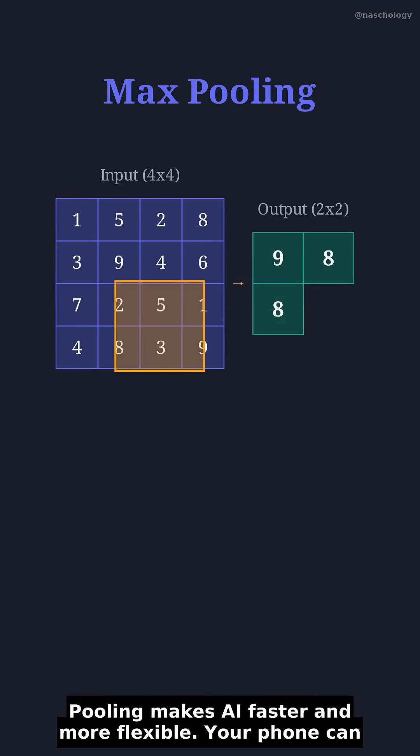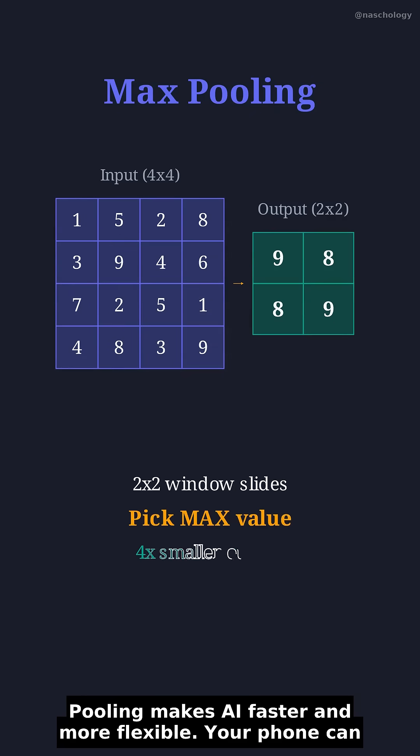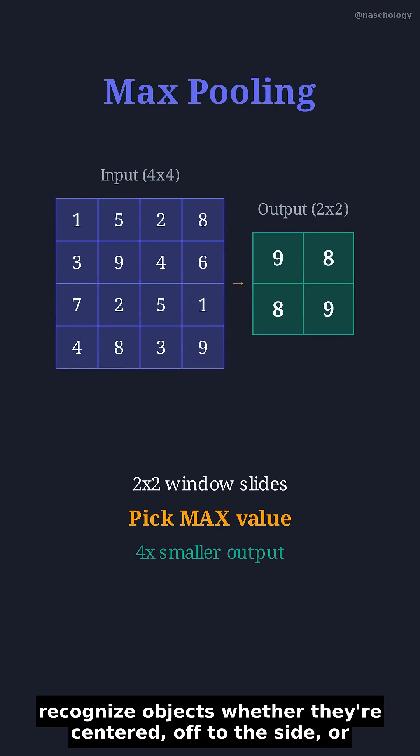Pooling makes AI faster and more flexible. Your phone can recognize objects whether they're centered, off to the side, or zoomed in differently.